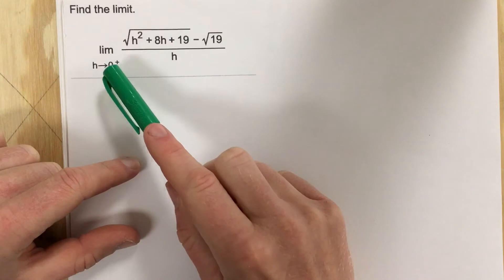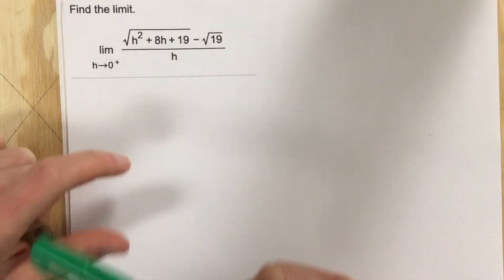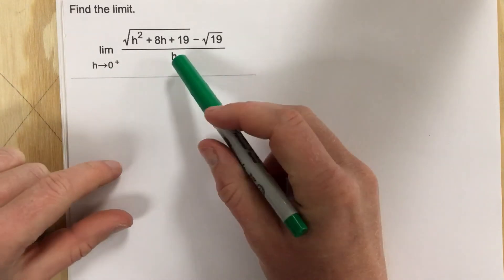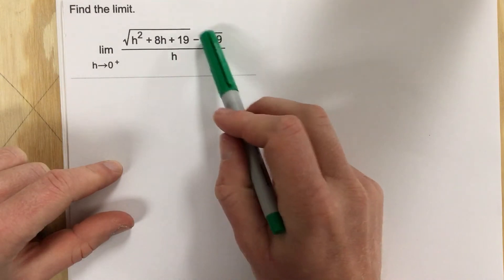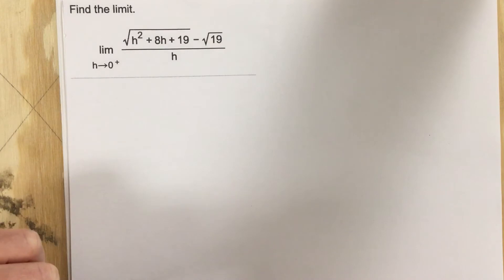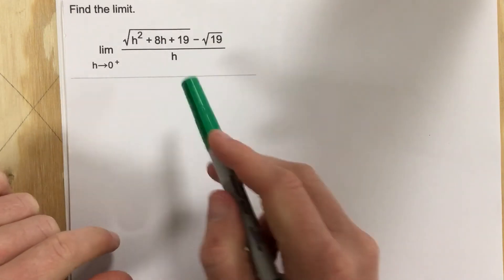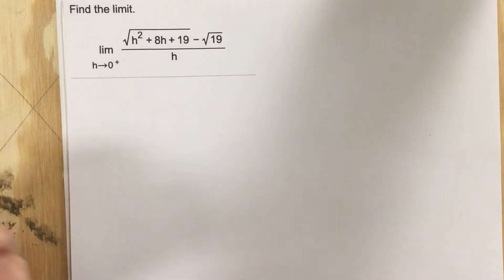So if I go to directly substitute zero in for h we're gonna get something that's undefined. So I need to do some algebra manipulation to this to get it in a form where I can essentially plug zero in and figure out what the limit is coming from the right.